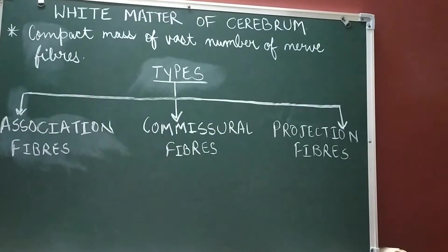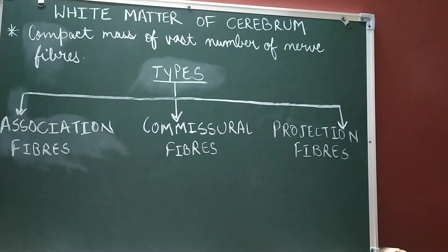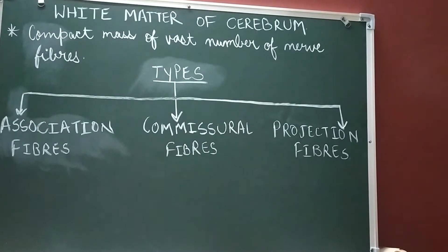Hi everyone. Today let's begin with talking about the white matter of the cerebral hemispheres. The white matter is simply a compact mass of a vast number of nerve fibers and neuroglia. The white matter lies deep to the cerebral cortex and forms the large volume of each cerebral hemisphere. Now, talking about the types of the white matter, or more precisely the types of fibers present in the white matter.